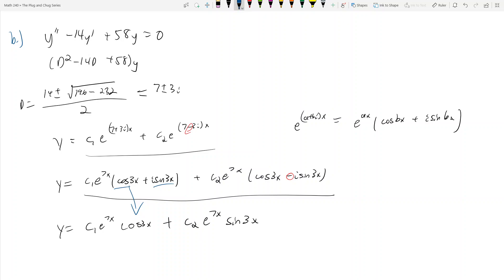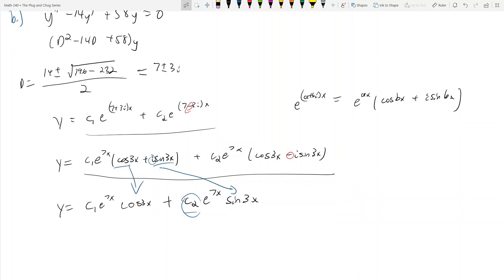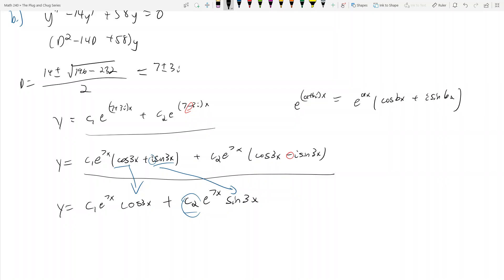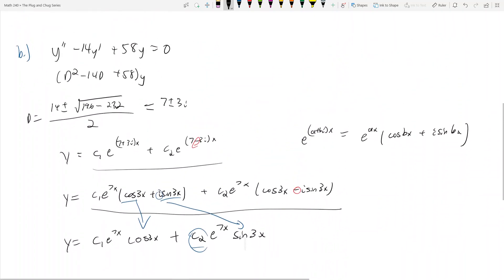The right way to write it is C1 e to the 7x cosine 3x plus C2 e to the 7x sine 3x. The sine gets its own C2 term constant. The way you can think about it is that the C2 has eaten the i. You have C2 e to the 7x sine 3x and C1 e to the 7x cosine 3x. This isn't very intuitive at first, but as you get more practice and you go along, this actually gets a lot easier. Let's do another example.